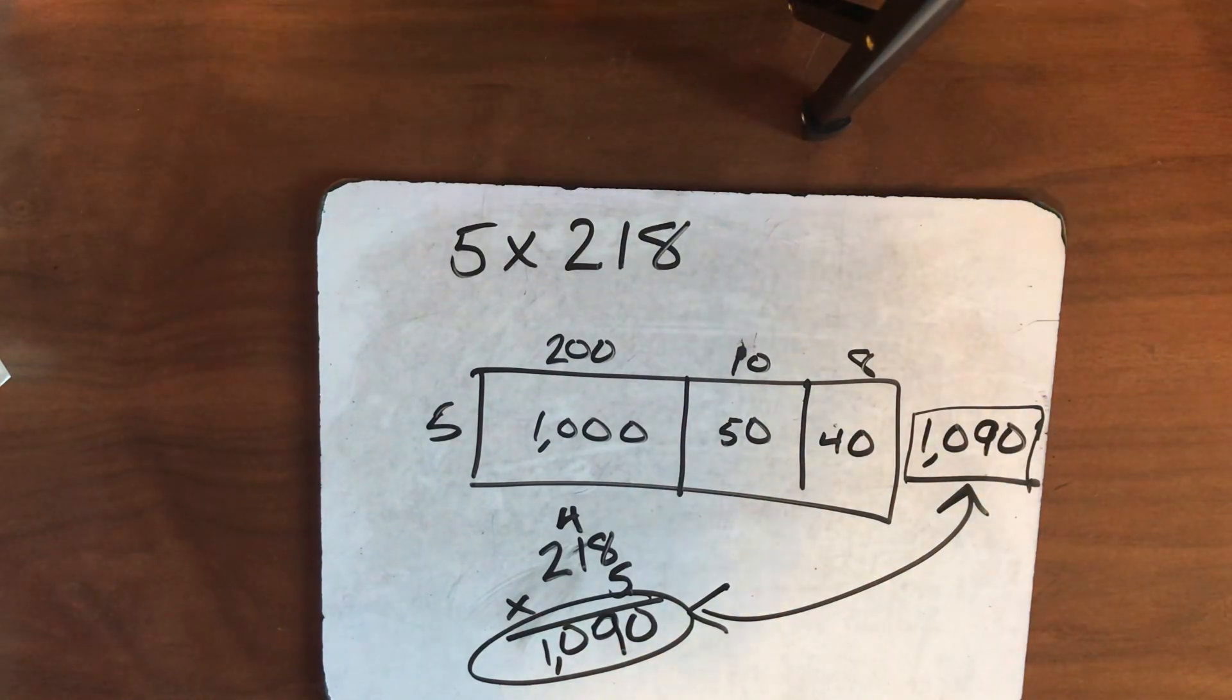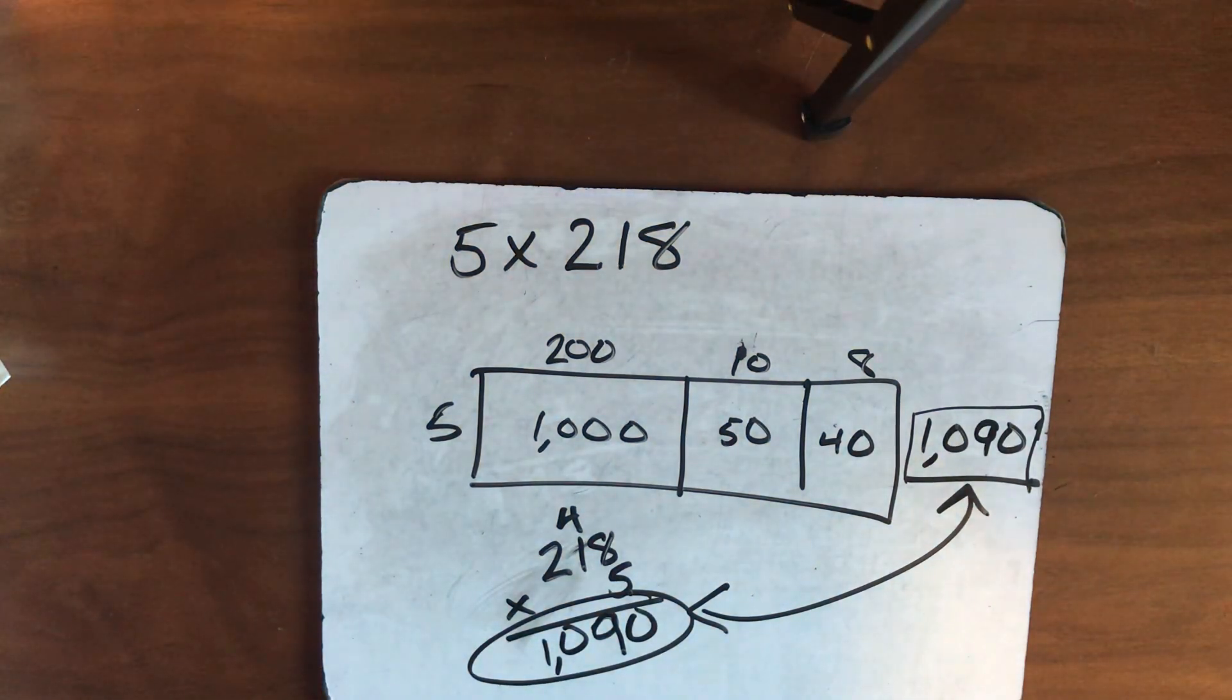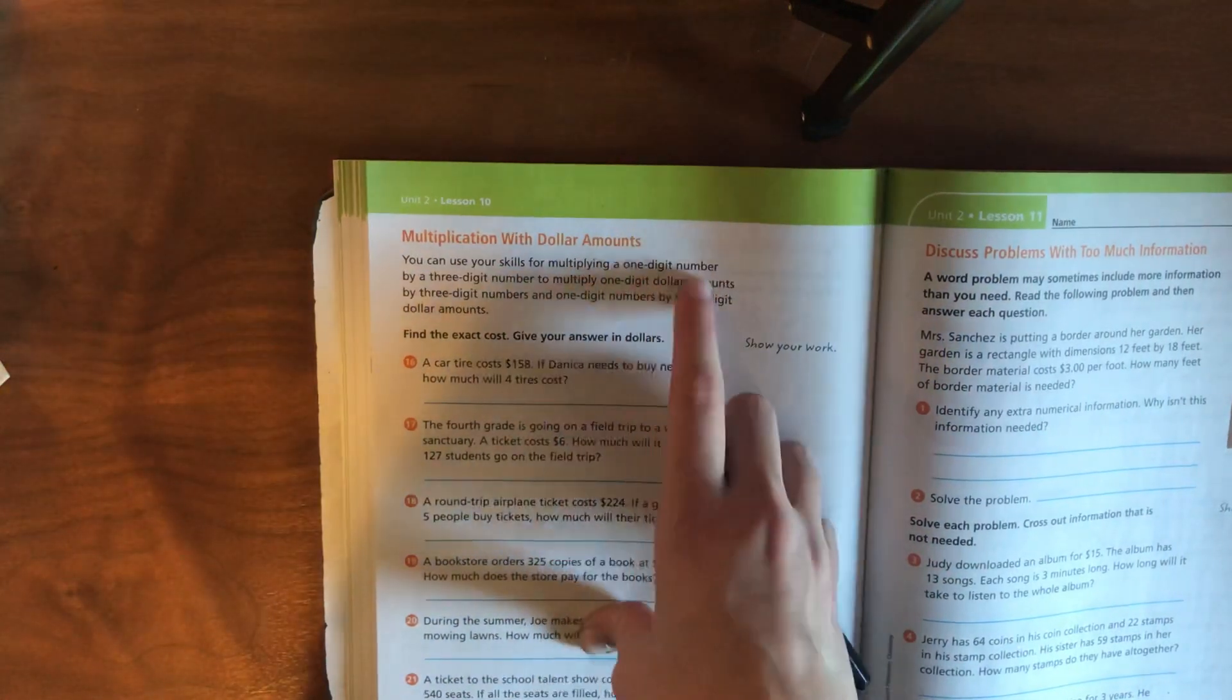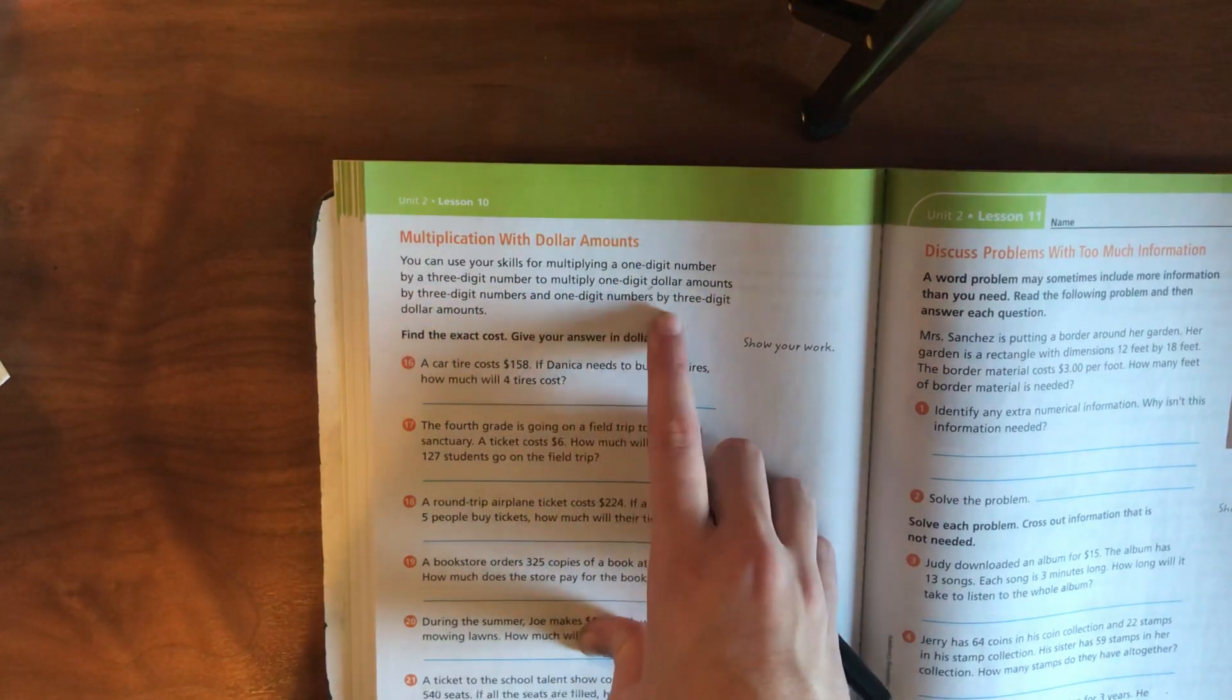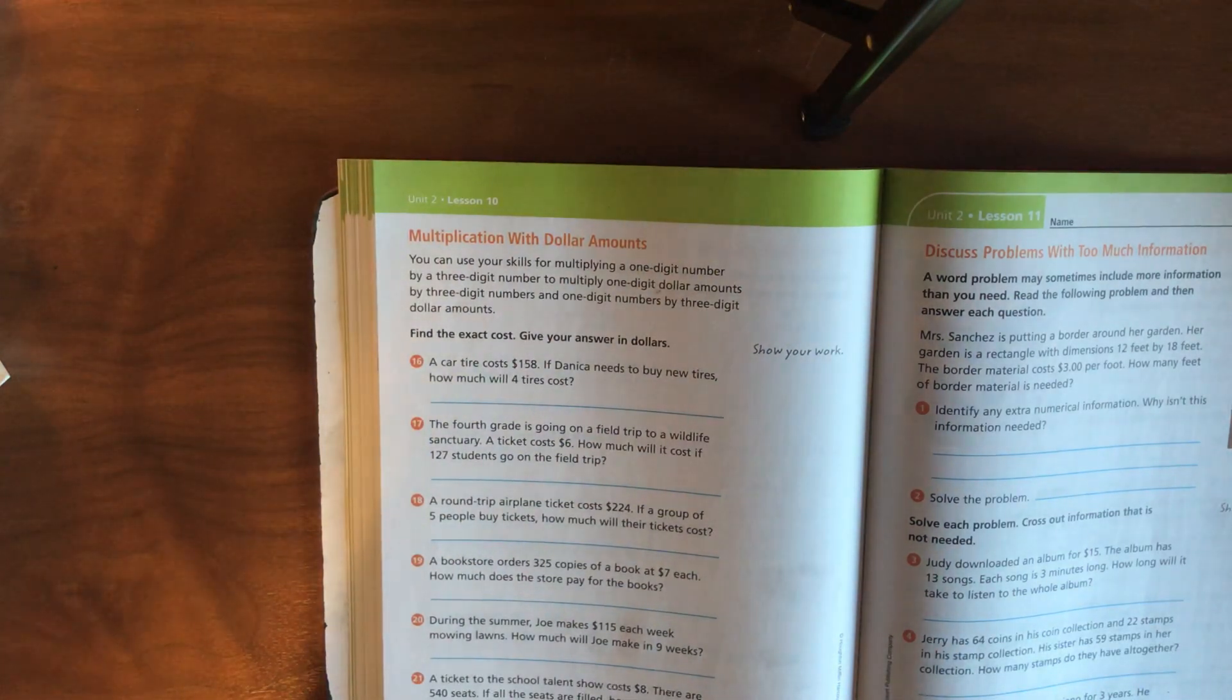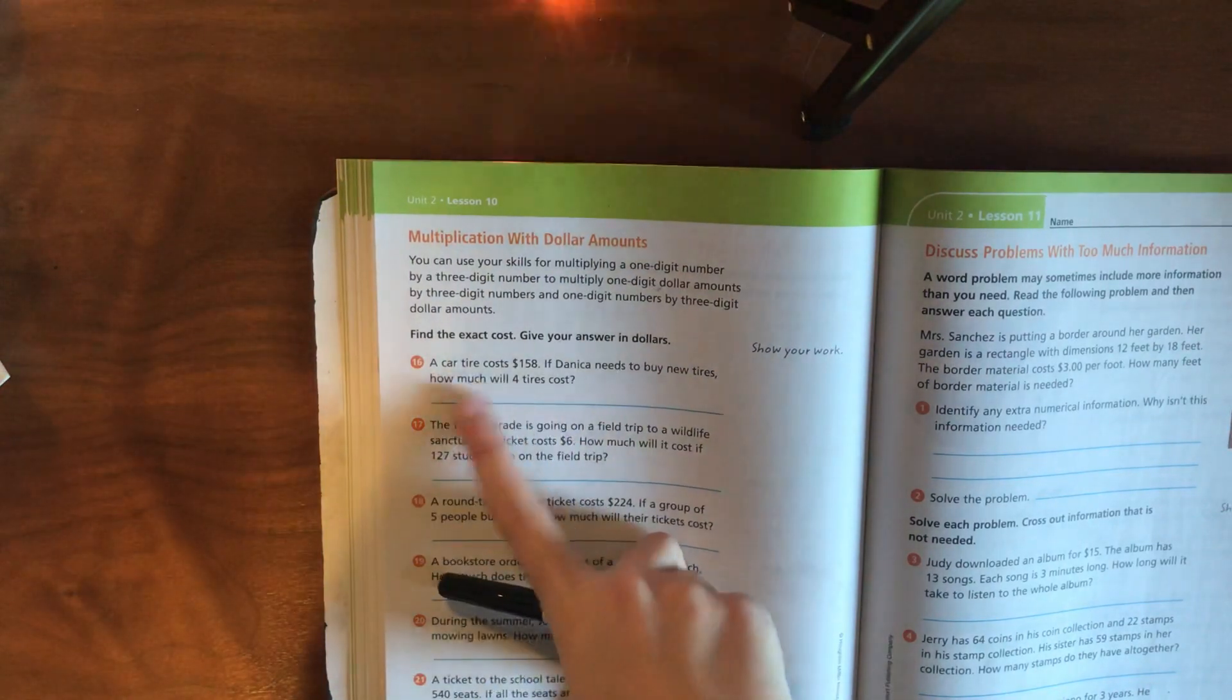That is pretty much the majority of what we're going to do. But to finish out, I do have one final little one to show you. And that is kind of a word problem to see if you guys can do this in a word problem. So this will be your final one that I'll leave you with. Let's read it together. So you can use your skills for multiplying a one-digit number by a three-digit number to multiply one-digit dollar amounts by a three-digit number and one-digit numbers by three-digit dollar amounts.